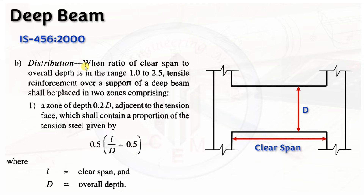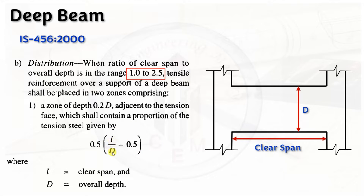Next, let's look at how to distribute the reinforcement in the negative zone. When the ratio of clear span to overall depth is in the range of 1 to 2.5, we divide the negative reinforcement into two zones. Zone 1 is a depth of 0.2d adjacent to the tension face, which shall contain a proportion of the tension steel given by the formula: 0.5 × (l/d − 0.5) × Ast, where l is the clear span and d is the overall depth.